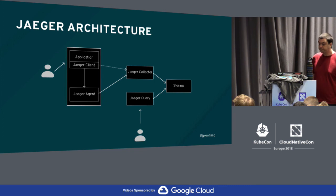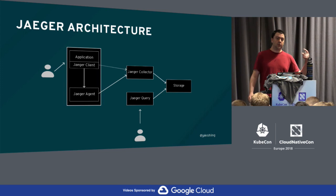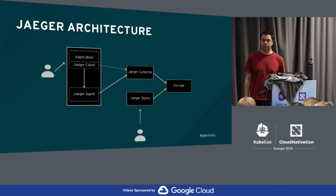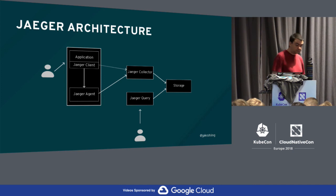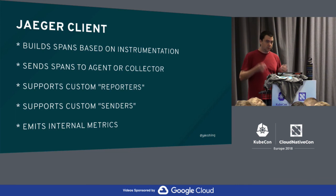Just to recap from yesterday, Jaeger is a set of components. There is one that runs alongside your application — the Jaeger client — which is responsible for capturing data and sending it somewhere. When we think about Java or Go, it's a library you ship with your application, either as part of the binary in Go or as a jar in your war or jar packaging for Java. That client sends data to an agent or to a collector.